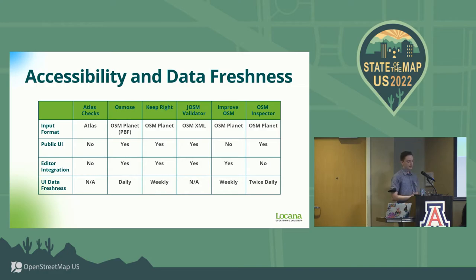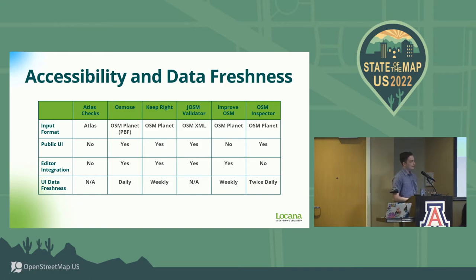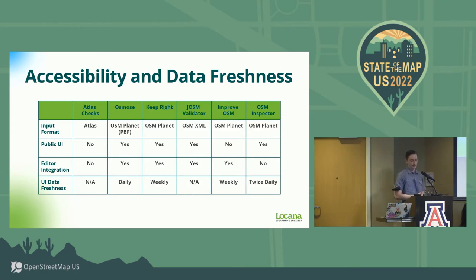Those platforms do introduce input data latency depending on their varying update cycles. Some validation tools take it a step further — such as Improve OSM and JOSM Validator — which are more streamlined, integrating directly into modern editing platforms like JOSM or iD Editor. That allows users to validate the current downloaded, modified, or imported data on an ad hoc basis, so the data freshness is as current as the user's input. With all these dimensions in mind, selection of a validation tool must depend not only on the use case but the technical understanding and operational preferences of the end user.